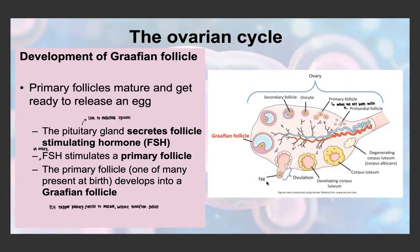The pituitary gland secretes follicle-stimulating hormone, FSH. In the ovary, FSH stimulates the primary follicle to begin to grow. The primary follicle then develops into a Graafian follicle — so FSH triggers the primary follicle to mature and become a Graafian follicle.